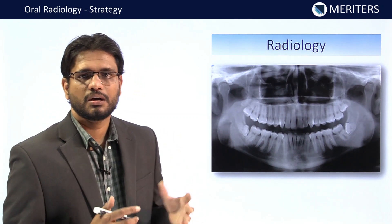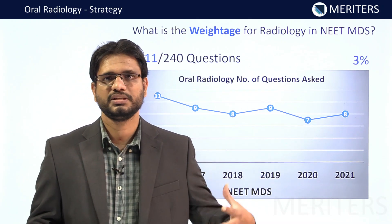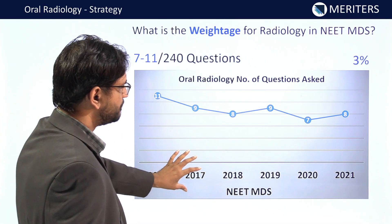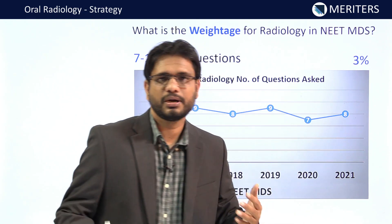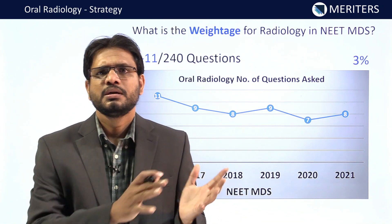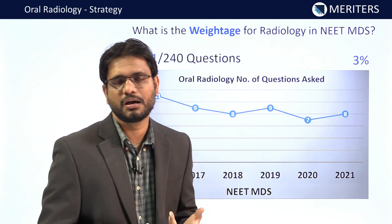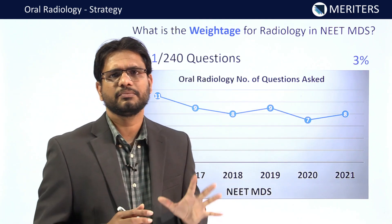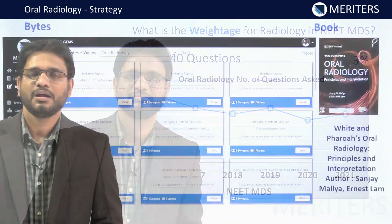Looking at the analysis of previous years for oral radiology: 11 questions in 2016, 9 in 2017, 8 in 2018, 9 in 2019, 7 in 2020, and 8 in the most recent 2021 exam. These are not all direct questions — they are interlinked with cases. Some direct questions can be expected from newer modalities: CT scan, MRI, CBCT, questions on voxels. Questions in exams like NEET and INICET are more applied.